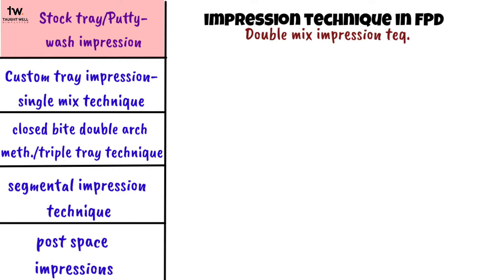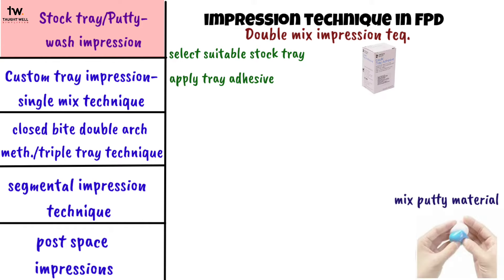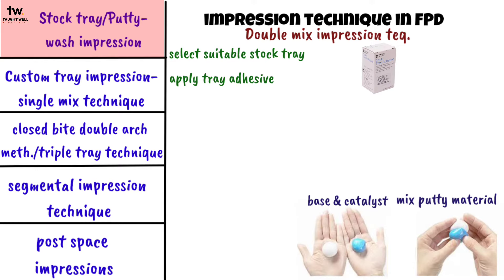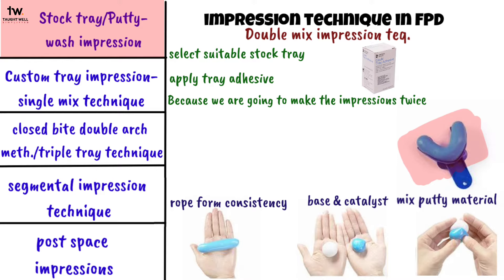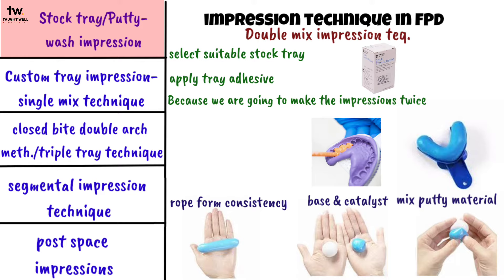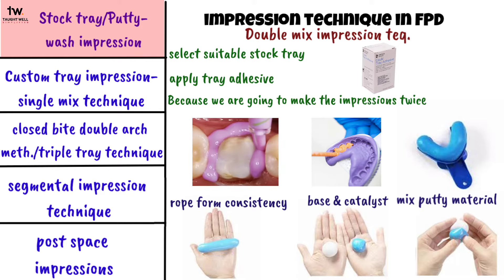We will start with the double mix impression technique. First, we select a suitable stock tray, apply tray adhesive, and mix the putty material, which is available as a base and catalyst. We take equal amounts of base and catalyst paste, mix them until we get a rope-form consistency, and load it into the tray. Then we place a spacer material — a polythene sheet — over the putty to create space for the final impression. After the putty sets, we remove the spacer and syringe light body impression material over the putty impression and over the prepared tooth to make the final impression.